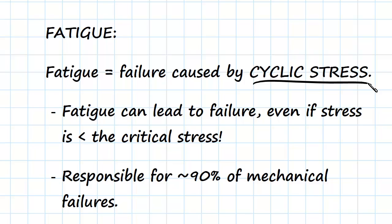So how is this possible? When we say cyclic stress, what we mean is a consistent period of time where a load is applied and then taken off — reloaded, taken off, reloaded, taken off. And even though this applied stress might be lower than the critical stress needed for an immediate failure to occur, due to the cyclic nature of the application, it can lead to an eventual failure.